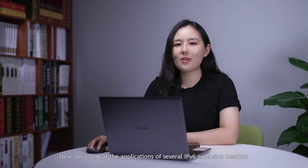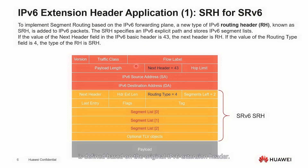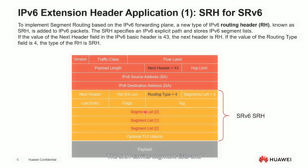Let's look at the applications of several IPv6 extension headers. First, SRH is used for SRv6. To implement SRv6, a new type of extension header called SRH is defined based on the original IPv6 routing extension header. If the value of the next header field in the IPv6 basic header is 43, the next extension header is the routing header. If the value of the routing type field is 4, the type of the routing header is SRH. The SRH carries segment lists and other related information to explicitly specify an SRv6 path.